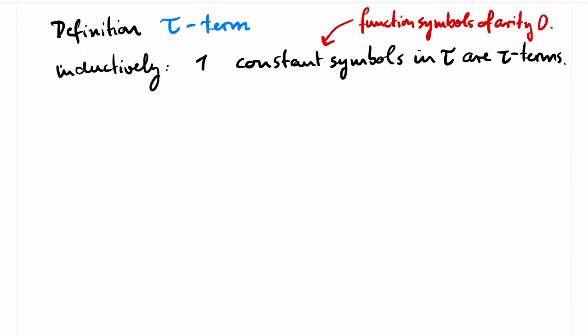We start with the definition of tau terms. These are strings of symbols that are defined inductively as follows. First, constant symbols in tau terms. Constant symbols are function symbols of arity 0. Second, variables are tau terms.